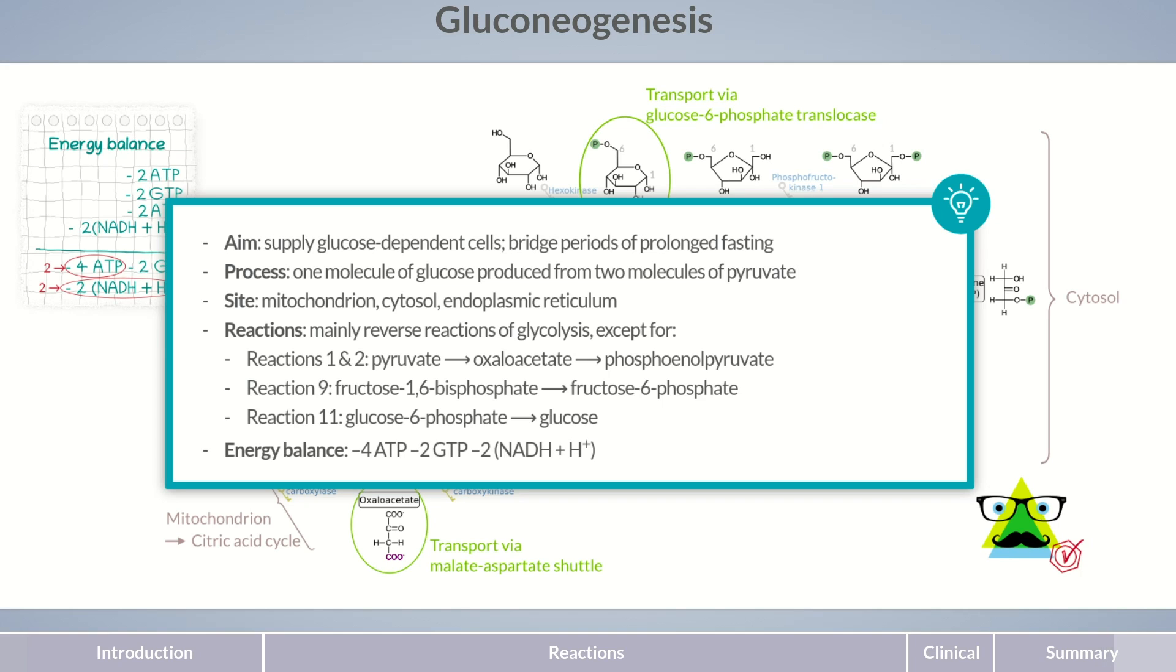For each molecule of glucose, 4 ATP, 2 GTP, and 2 NADH and H+ are used in gluconeogenesis. Of these, only 2 ATP and 2 NADH and H+ can be recovered through renewed glycolysis.